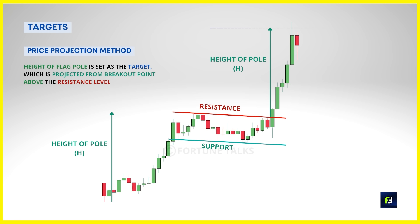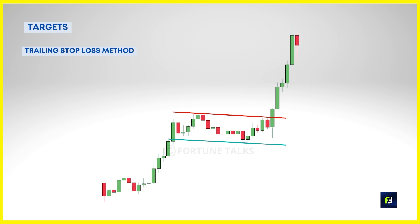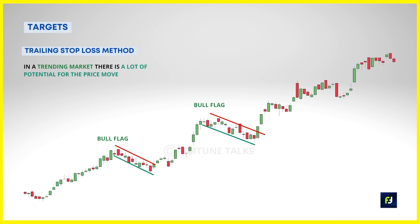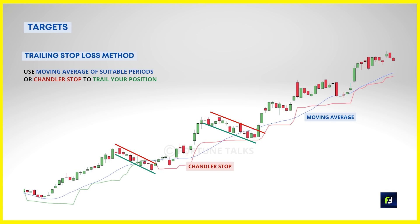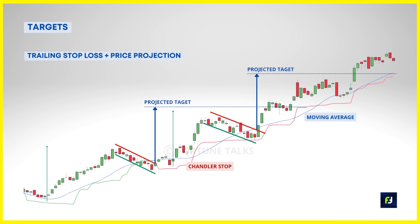An alternate method is to trail your stop loss until the market takes you out. The bull flag pattern usually appears in a strong trending market or just after a range breakout — in such conditions there is a lot of potential for the trend to continue, and the only way to ride it is to trail your stop losses. You can use moving averages or Chandelier Stop to trail. It's much better to use a combination of both methods: lock in part of your profits using the price projection method, then ride the rest of the position using the trailing stop loss, thereby protecting psychology and avoiding potential losses.